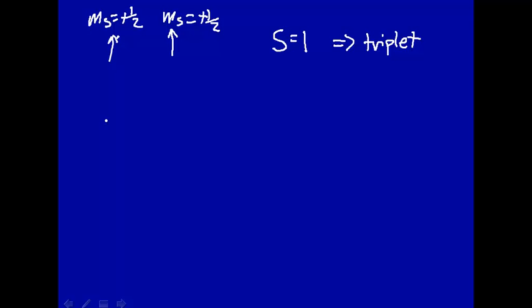On the other hand, suppose you have M_S equal 1/2, but here you have M_S equal minus 1/2. The total S here will be 0, so this will be a singlet. So if you have 2 electrons, a triplet means that they have the same value of M_S, and a singlet means you have opposite values of M_S.